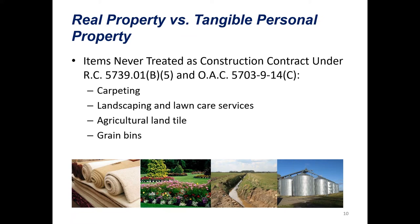Before we move on to case law, it's important to go over items that are never considered construction contracts under ORC 5739-01-B5, also found in Ohio Administrative Code 5703-914-C. These include carpeting, landscaping and lawn care services, agricultural land tile, and grain bins. Notice that there's no other type of flooring listed—laminate, vinyl, hardwood are all going to be considered incorporated into the real property under a construction contract, but carpeting is not. Carpeting is always going to be taxable to the contractee.